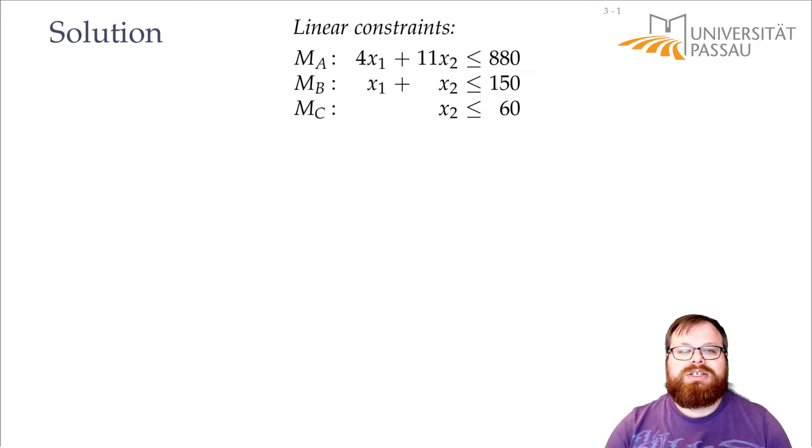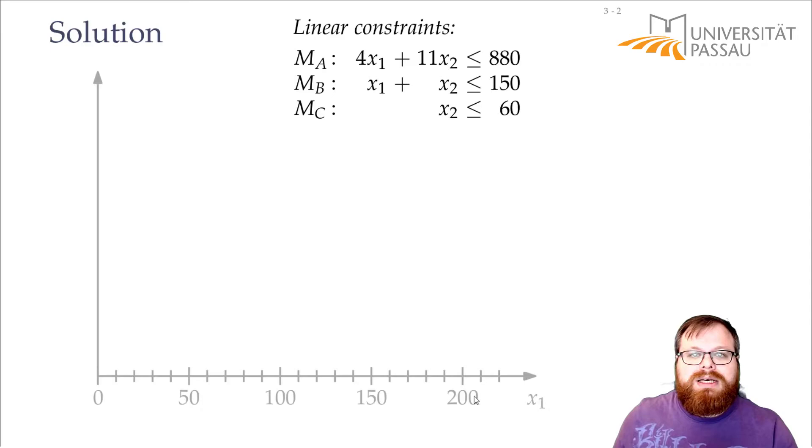We can model this as a geometrical problem. If you're also listening to computational geometry, this might look familiar to you. So we have these linear constraints. And each constraint tells us how many of each type can we produce. We can produce at most 60 mice per day, at most 150 in total, and whatever that is. So what we can do is, we can take a coordinate system. And on the x-axis, we put x1. And on the y-axis, we want to put x2.